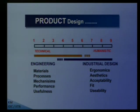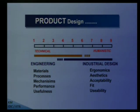When we talk about product design, there are two basic aspects: one is the technical aspect, another is the humanistic aspect. The technical aspect relates to the engineering part — materials, processes, mechanisms, performance, usefulness. The humanistic aspect covers ergonomics, aesthetics, acceptability, fit, and usability. When you talk of holistic design, usefulness and usability have to come together to make a complete product. Unless both these aspects come together, the products cannot be successful and will not be acceptable.